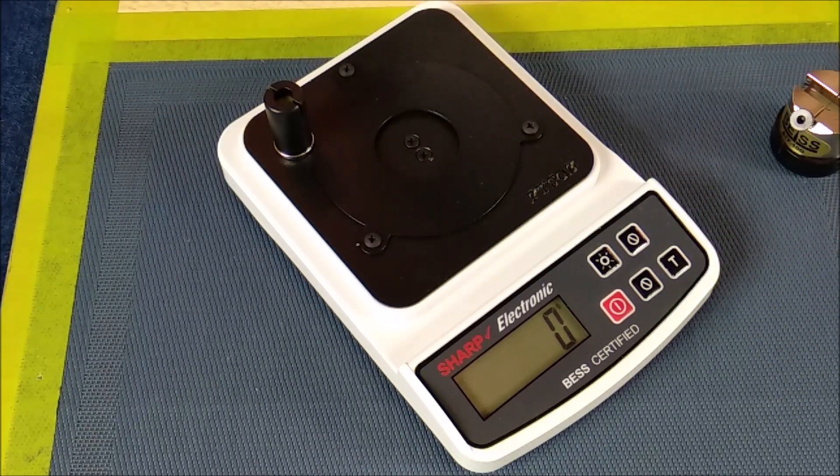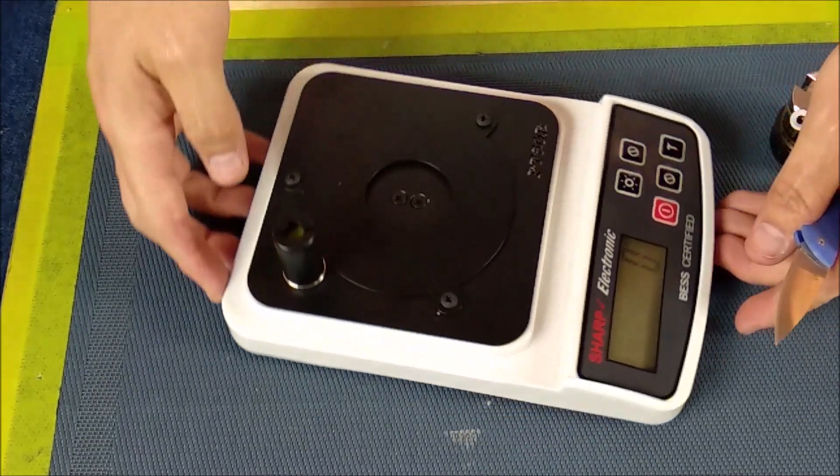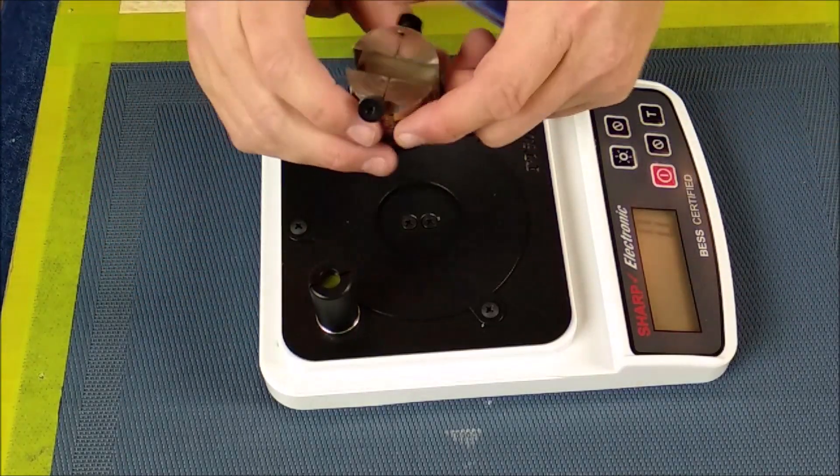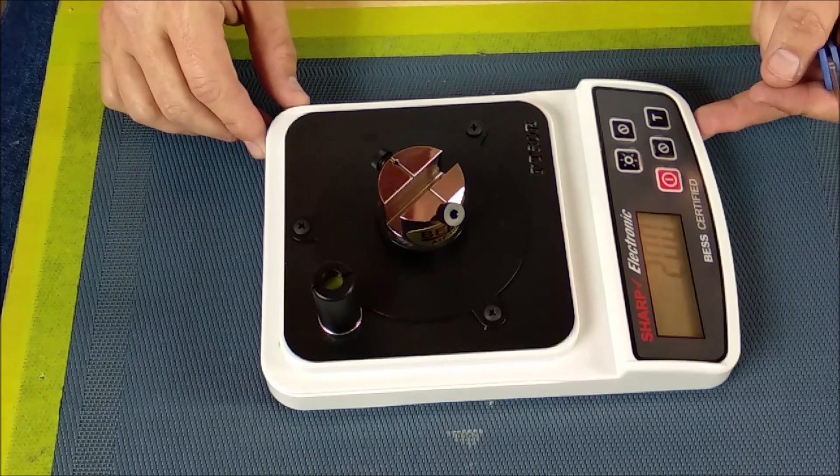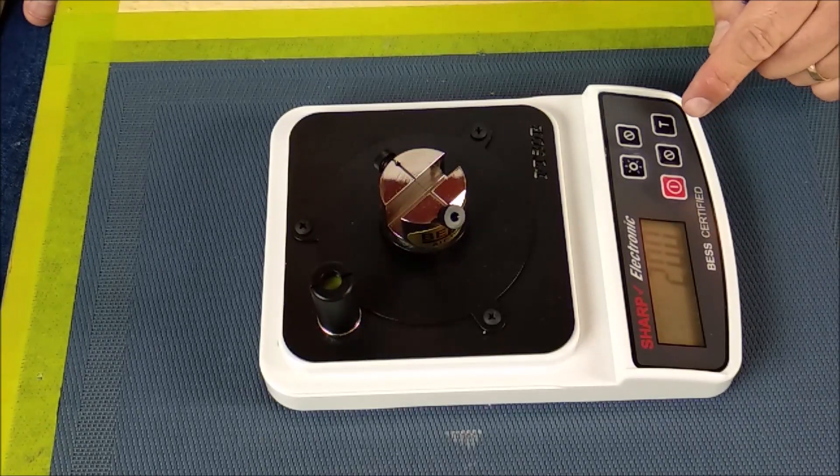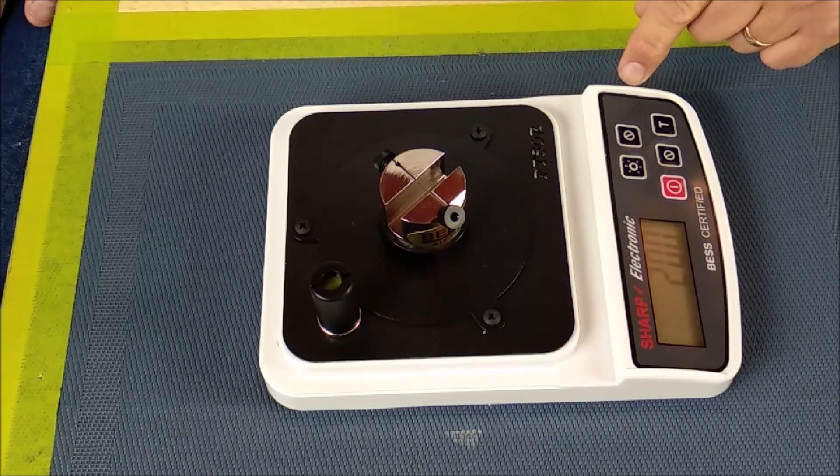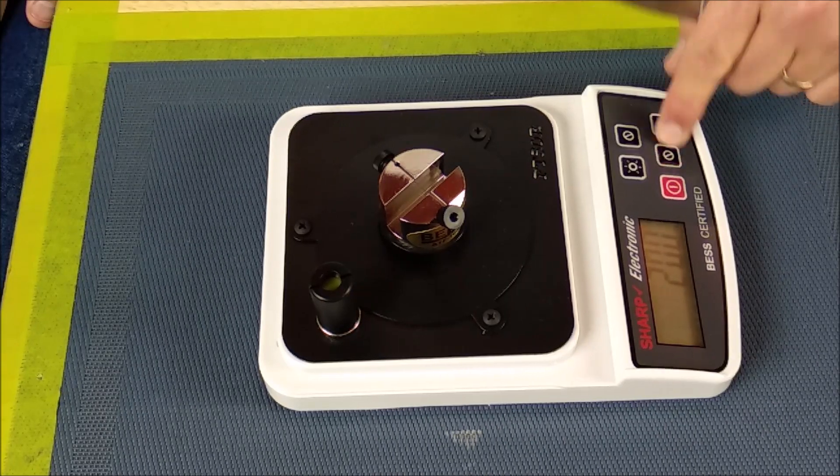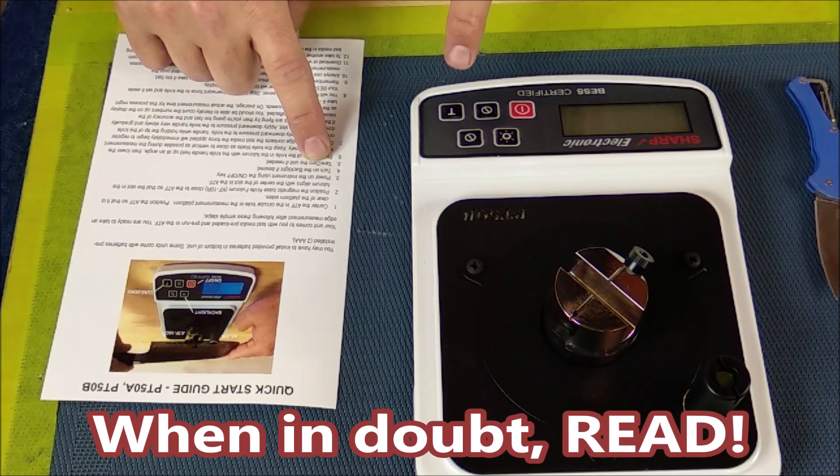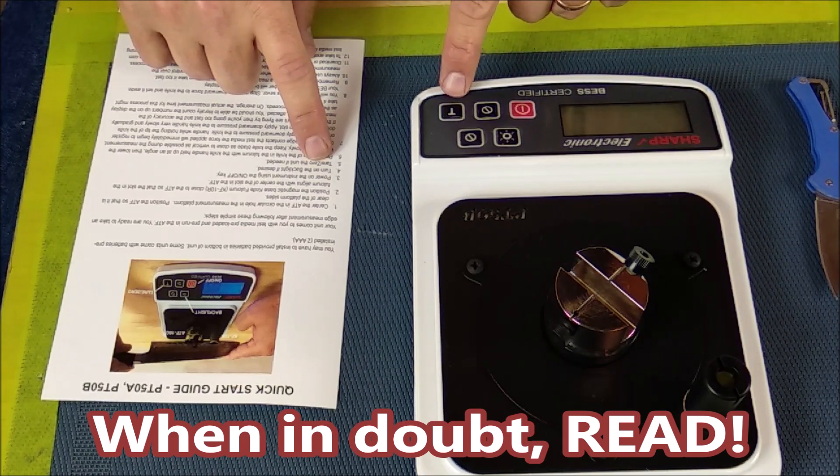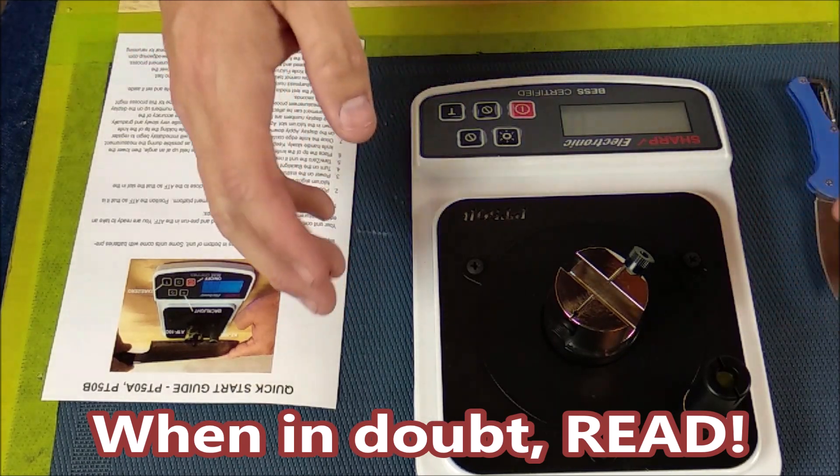It gives you a reference point. It takes this much pressure with this specific blade at this time to cut through that wire. The way it works is you put the device across on the scale and you zero it out, which is the number, press the T to tare it to zero, so now it's at zero.